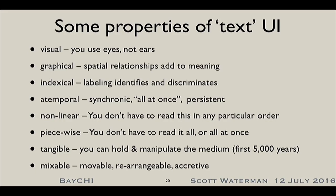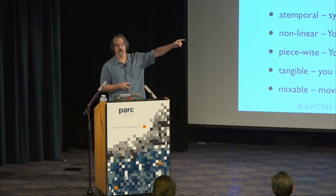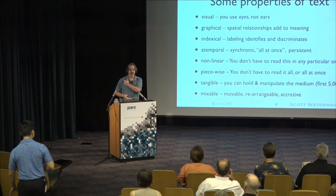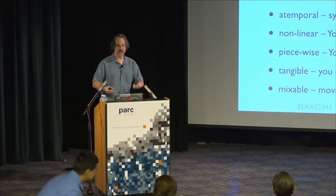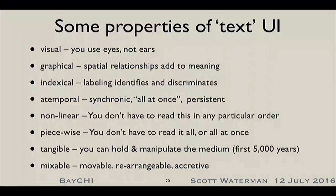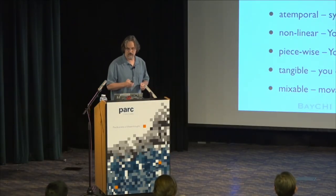Obviously it's visual, but it's also graphical. The layout and interrelation of statements in the text and how words appear relative to one another adds a huge amount to the meaning. It's indexical — I know that's an exit to the room because it says exit. If we all had name tags this evening, I'd know who was who just because the name tag was attached to you. The words themselves are pointers. It's totally atemporal — it sits around for a long while. I can read it now or I can read it later. And for the last 5,000 years, it's been a tangible medium. Text is something you can point to, hold, slap on the table.